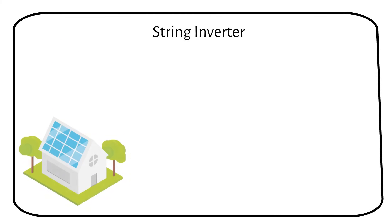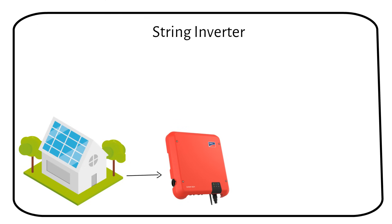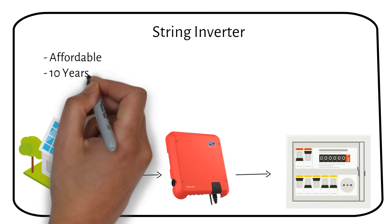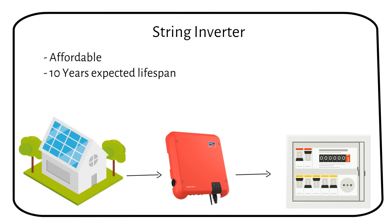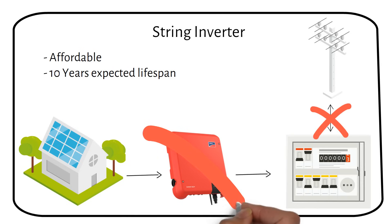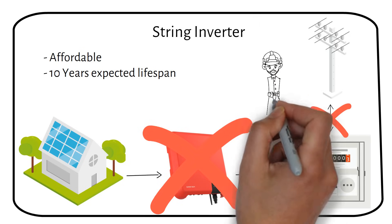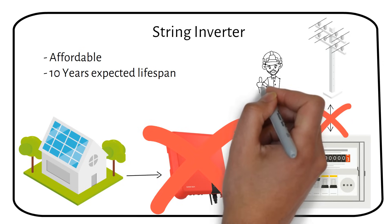A string inverter links solar panels together in a line or a string and transforms their power into AC, which we can use in our homes or send back to the grid. This kind of inverter is common in homes because it's affordable and straightforward. Its expected lifespan is about 10 years, making it a good choice for grid-tied solar power. However, this inverter must be connected to the grid — if there's a problem with the grid and it stops working, the string inverter will turn off to keep people who might be fixing the grid safe, so they don't get shocked by unexpected electricity from the solar panels.